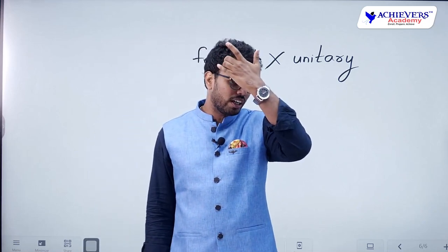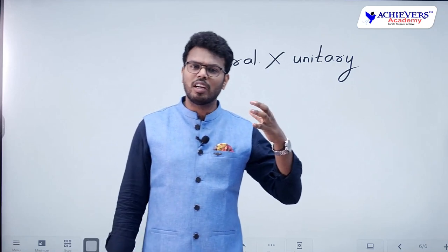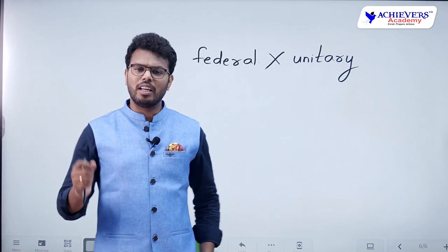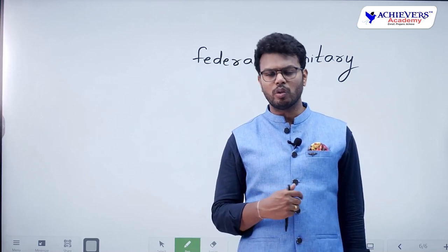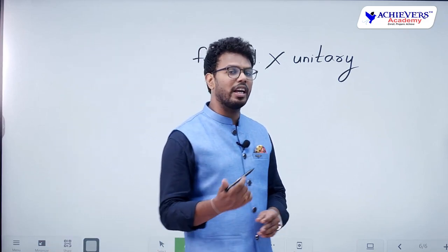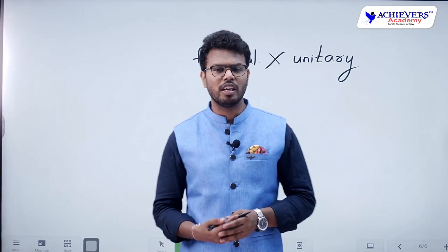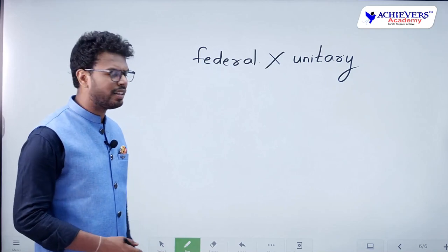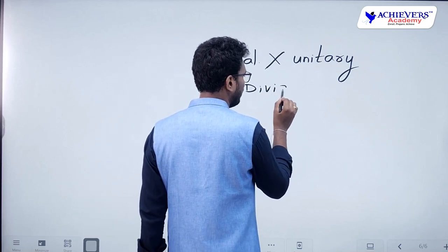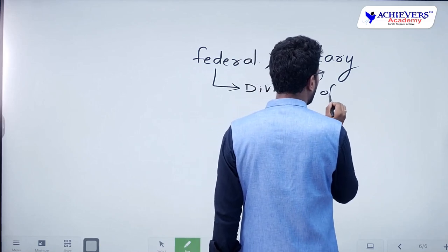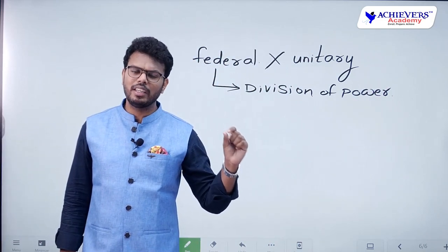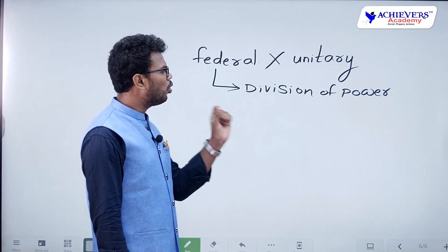In a unitary state, all powers are concentrated in one single government. In a federal state, all powers are divided between two governments. United Kingdom and North Korea are examples of unitary states. India, the United States of America, Canada, and Australia are examples of federal states. Whenever we discuss a federal state, the first thing that comes to mind is division of powers.